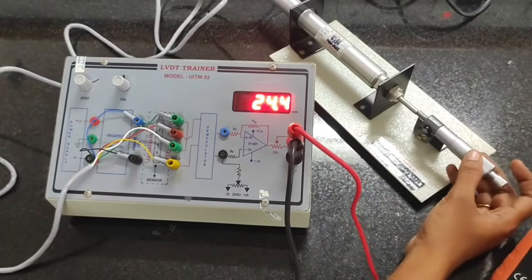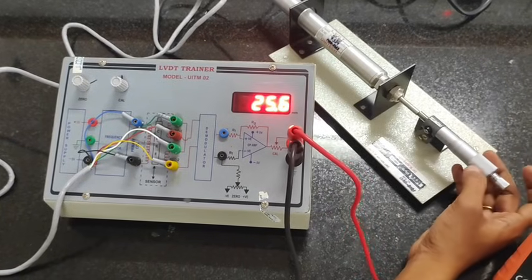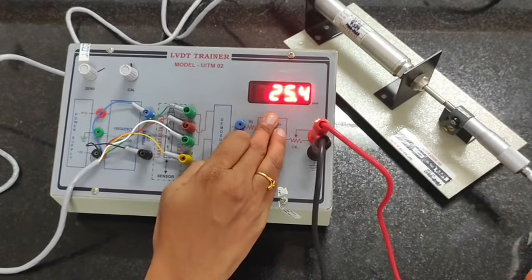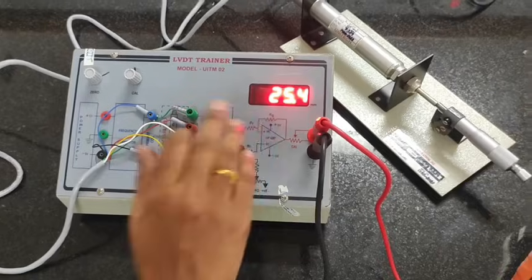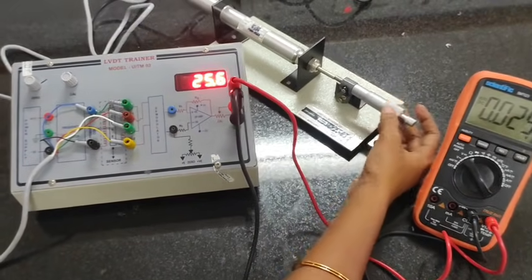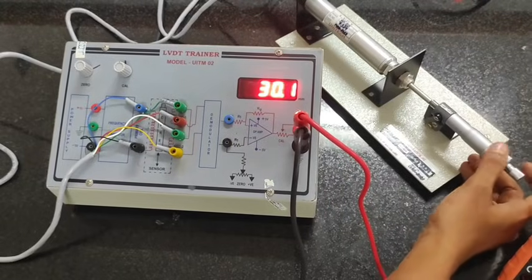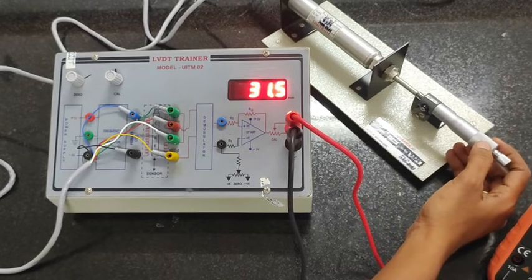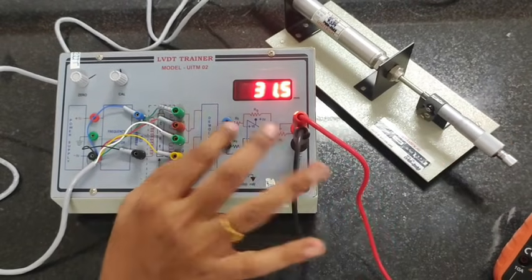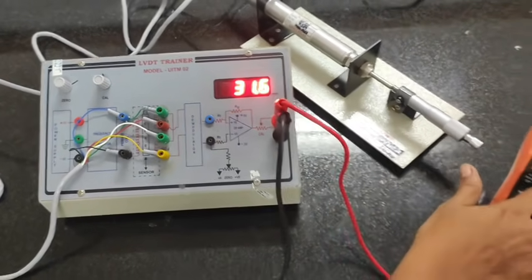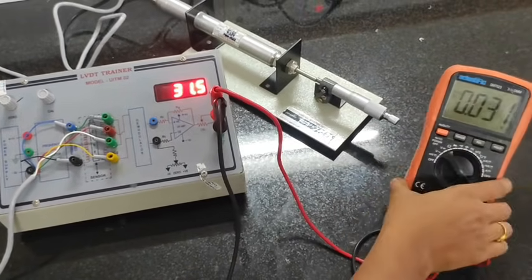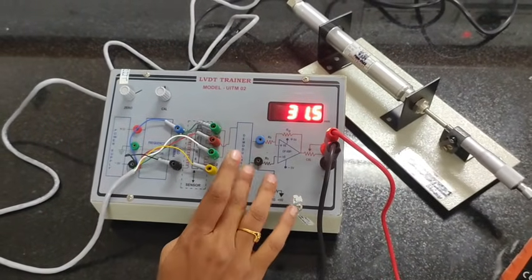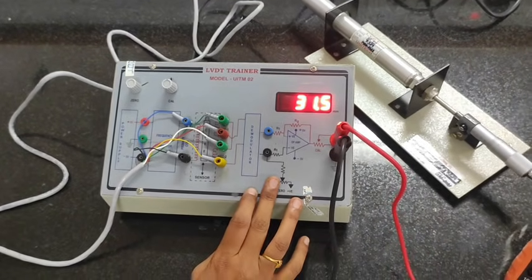Then we can start taking readings for both positive displacement and negative displacement. From keeping the center as position 10, you can take readings like 10, 12, 14, 16, 18, 20 for positive displacement. And similarly, you can take readings for 2, 4, 6, 8, 10 for negative displacement. And you can calculate the error for the displacement and output voltage, comparing the displacement in the screw cage and the displayed displacement.